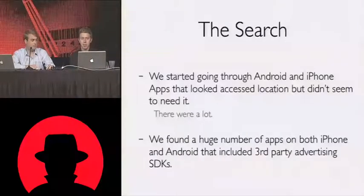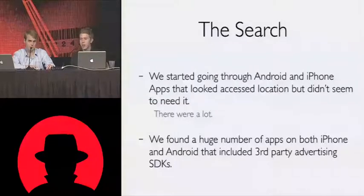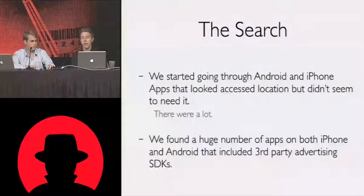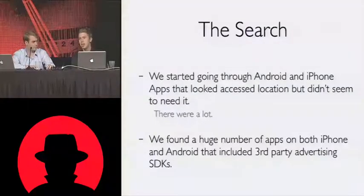We started going through these apps. Apps that access location but didn't seem to need it — these are things that seemed anomalous, like the soundboard. We said, why does the soundboard need to access this? And what we actually found, over and over again, was that third-party SDKs were the only piece of code in the application that was accessing the location. It turned out to be third-party advertising SDKs. When you think about it, it makes a lot of sense — an advertising SDK can access your location in order to serve you more targeted ads.